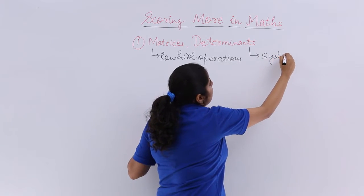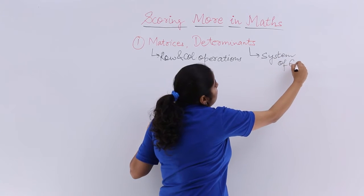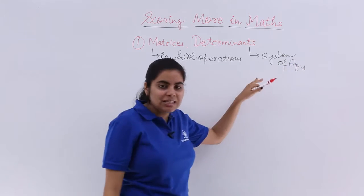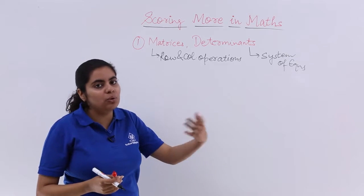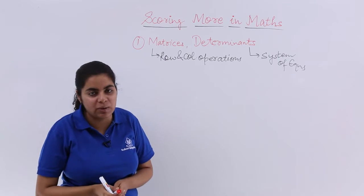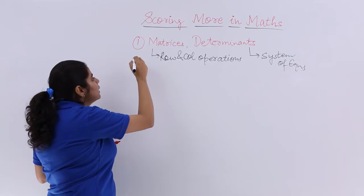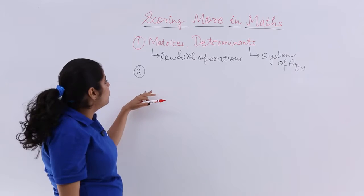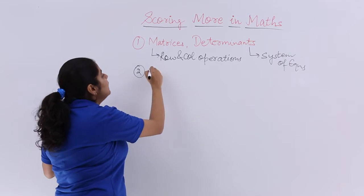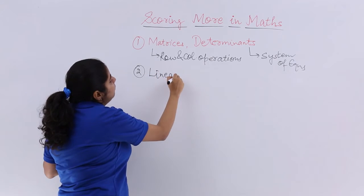And in determinants, the system of equations. The system of equations in the determinant, this is a topic wherein you can get more number of marks from a single question. Say 4 marks directly you can get, 6 marks directly you can get. Once you have completed the whole of matrices and determinants, my advice to you would be go for linear programming, LPP.